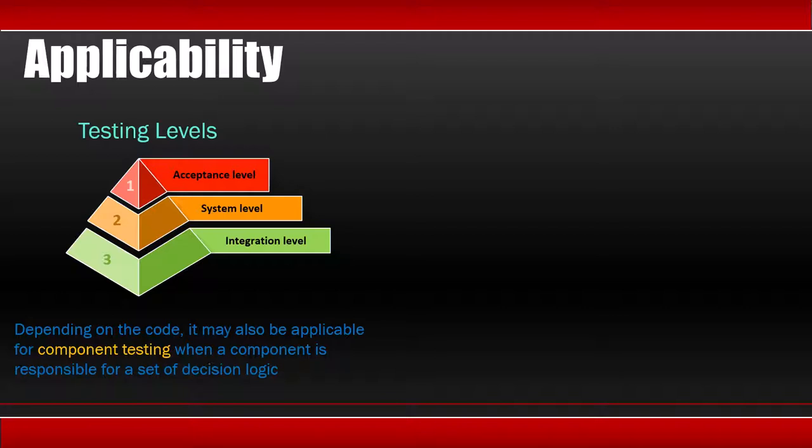If your code contains decision logic, then only you can apply cause-effect graph at component level. If there is no decision logic, then you cannot apply. But in these three levels, you can apply.